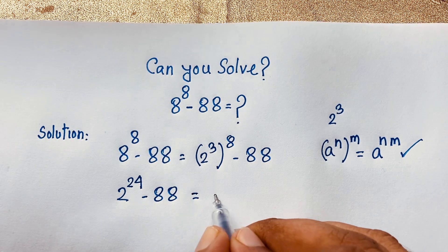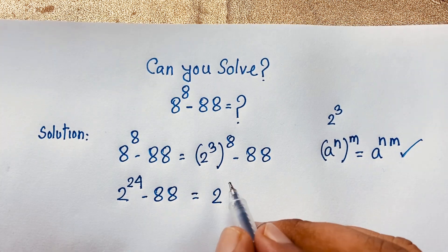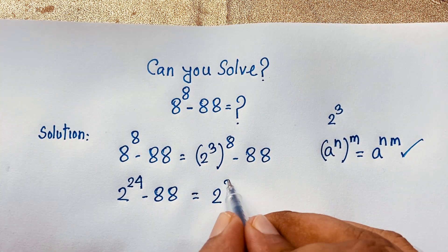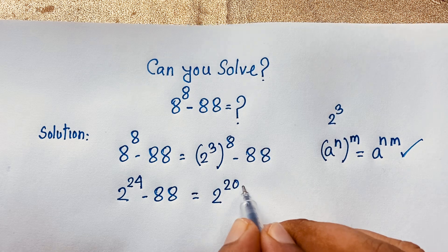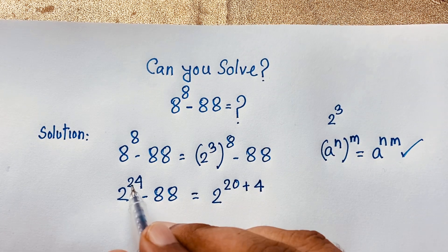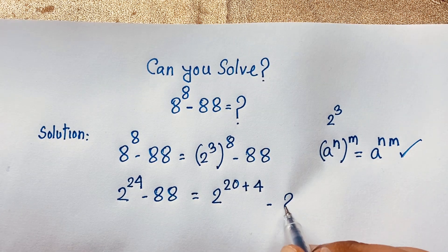Then here 2 to the power 24. So it will be 20 plus 4, it will be 24, minus 88.